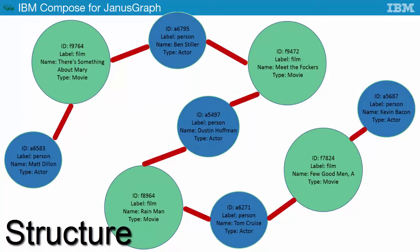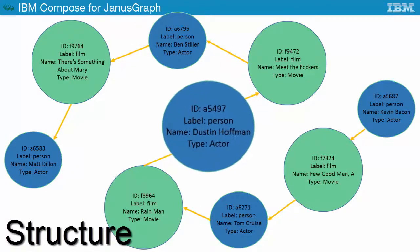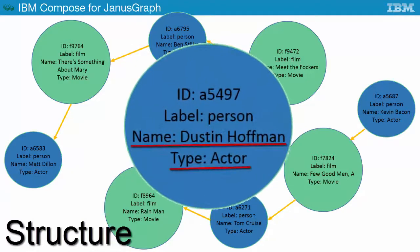Edges are the connections or relationships between two vertices. Each edge contains a unique identifier, a start and end node, and a set of properties. A property is just a string key associated with a value and attached to an element.